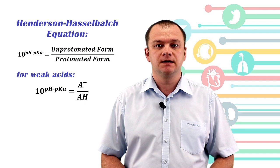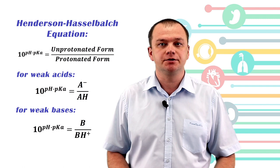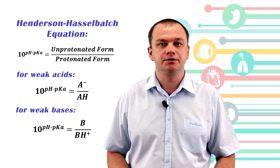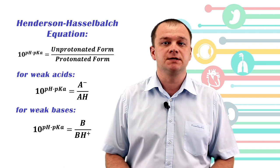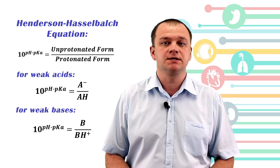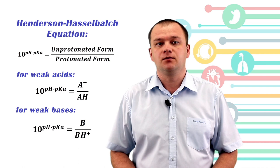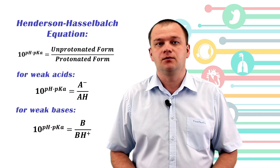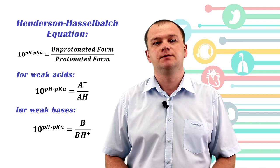The ratio of lipid-soluble form to water-soluble form for weak acids or weak bases — the ratio between ionized and non-ionized forms — is expressed by the Henderson-Hasselbalch equation. This equation helps us predict how much of a drug will be present in ionized or charged form, and how much will exist in uncharged or non-ionized form. To predict this, we need to know the pH of the environment, the drug's pKa, and whether the drug is a weak acid or weak base.